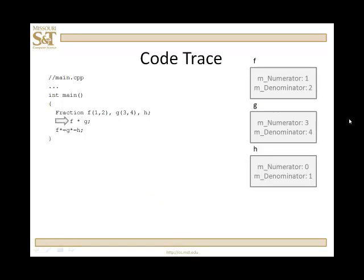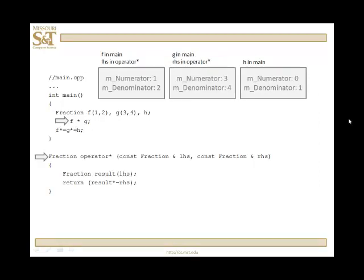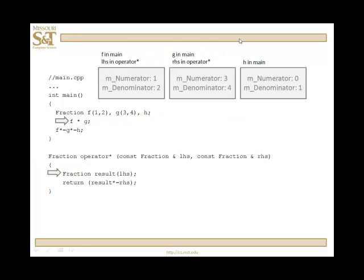Now let's take a look at the second line where we set h to be assigned the value of f times g through the star operator. We call the operator star function. f is going to be left-hand side, g is going to be right-hand side. So f in main and left-hand side in operator star is this object here. Likewise, this object is g and right-hand side in operator star.